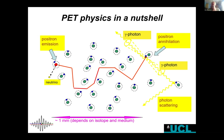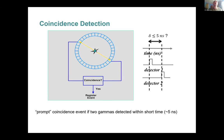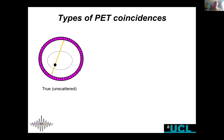We can be unlucky and one or both photons might scatter, giving us wrong spatial information, but most of the time the two gamma photons are on a line. The PET scanner uses timing circuitry: if two gamma photons are detected within a very narrow time window, that is called a coincidence and is recorded. If the timing difference is larger than about five nanoseconds, we know they are from different annihilations and discard them. We don't need a collimator, which makes PET quite sensitive.